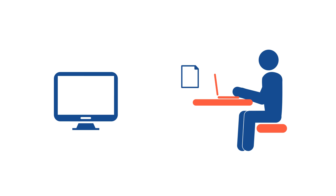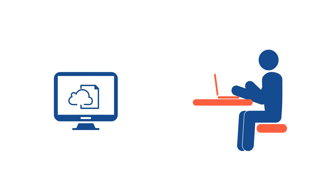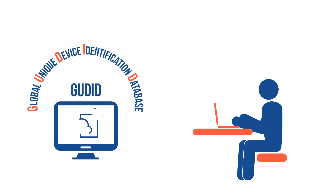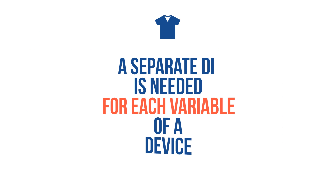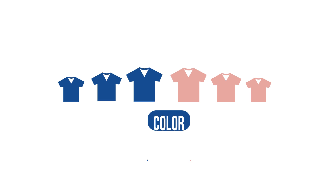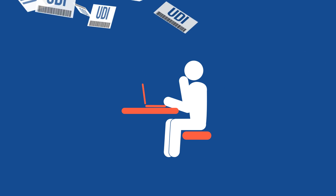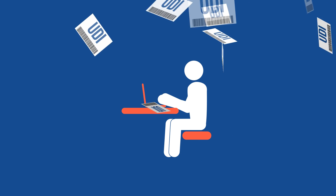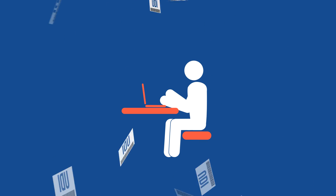Labelers must also submit information about each device labeled with a UDI to a publicly searchable database called the Global Unique Device Identification Database. A separate DI is needed for each variable of a device, such as size, color, or style, so the number of UDIs for a single type of device can add up quickly.